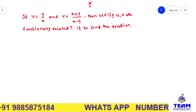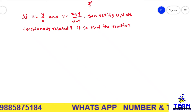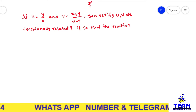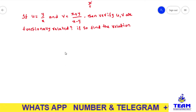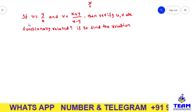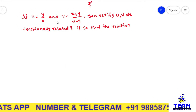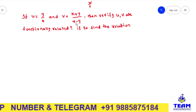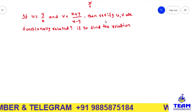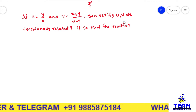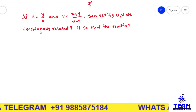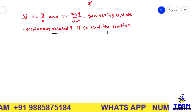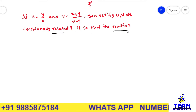Hi friends, in this video we are solving a problem on Jacobian. The given problem is: if u is equal to y by x and v is equal to x plus y by x minus y, then verify u comma v are functionally related. If so, find the relation between them.